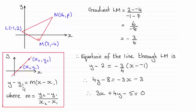You should be familiar with this form of the line: Y minus Y1 equals M the gradient times X minus X1, where X1, Y1 is any point on the line.